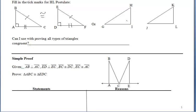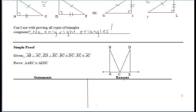I'll show you a similar HL example, but note that sometimes you may have to use SAS to prove right triangles congruent still, depending on if the right angle is included between the two congruent sides or not. HL cannot be used in any type of triangle — it can only be used in right triangles.